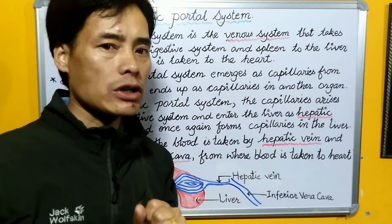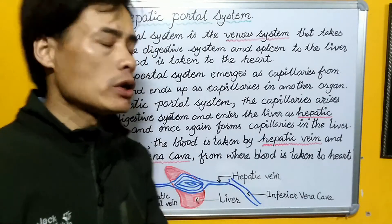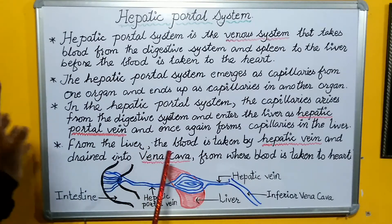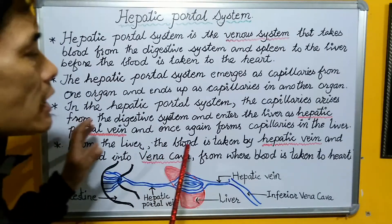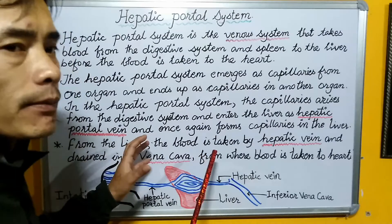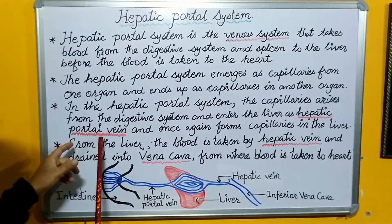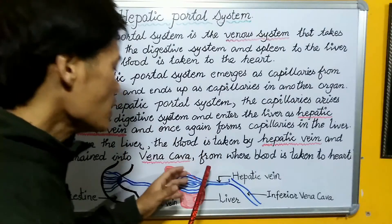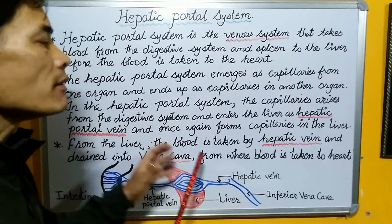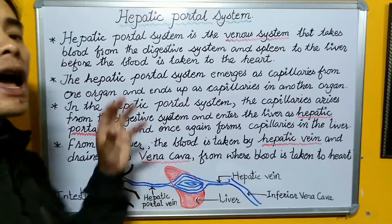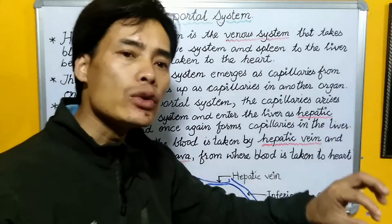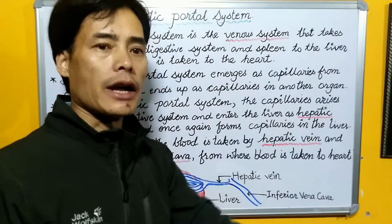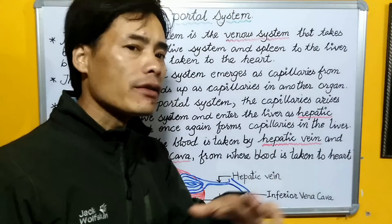Here in the hepatic portal system also, the liver collects the blood from the digestive system by means of the hepatic portal vein. And ultimately from the liver, the blood will have to be drained into the vena cava — in this case it is the inferior vena cava.